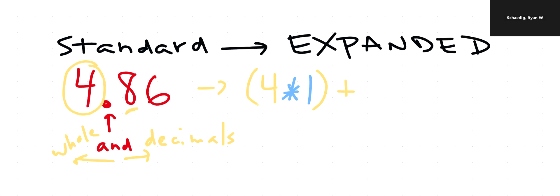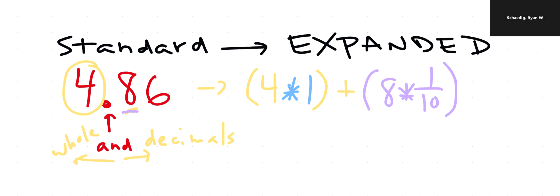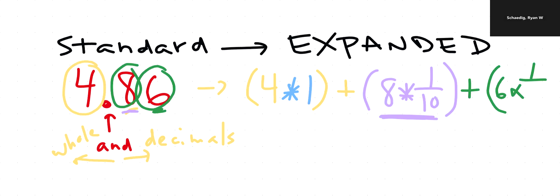Now here's the skill we're learning. We have an eight, and we're multiplying it by one-tenth. Remember from our last lesson — if you can read it, you can write it. Since this is a tenth, we write it as eight times one-tenth. Eight times one-tenth is the same thing as eight-tenths. Then we have a six times one-hundredth, because that's the hundredths place. That's standard to expanded form.